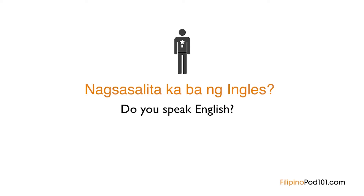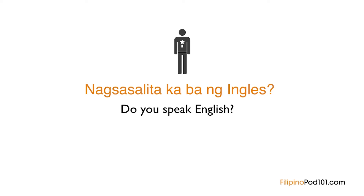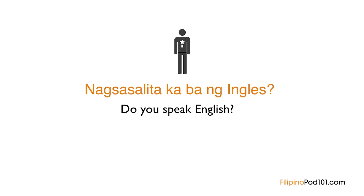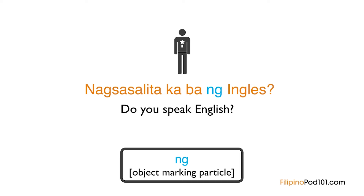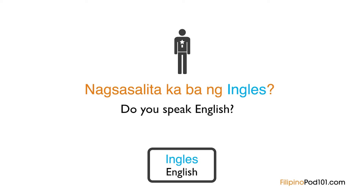Let's break down the sentence. In Filipino, the verb can come before the subject. 'Nagsasalita' means 'speaking,' followed by 'ka,' which means 'you.' Next, there is 'ba,' which is the question marking particle. After it comes 'ng,' which acts as an object marking particle, marking 'English' — which, as you might have guessed, is English.